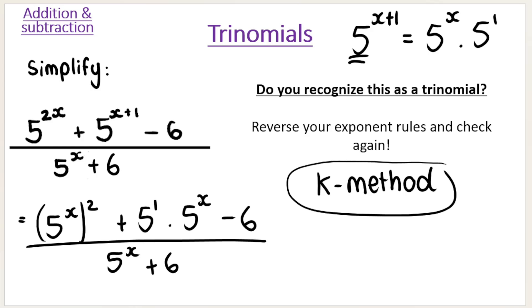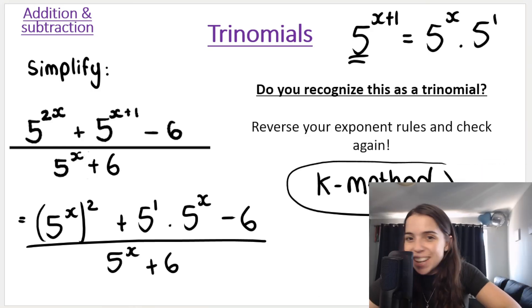Now, this is a method that mathematicians invented. It is where we replace something in the expression with the letter K. I don't know why it's a K, but it's a K. So we replace something in the expression with the letter K to make it easier to simplify.